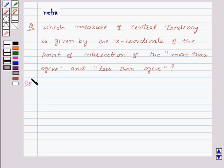Let's see its solution. We know that ogives are related to median. When we draw both ogives, i.e., less than type and more than type, on the same graph,